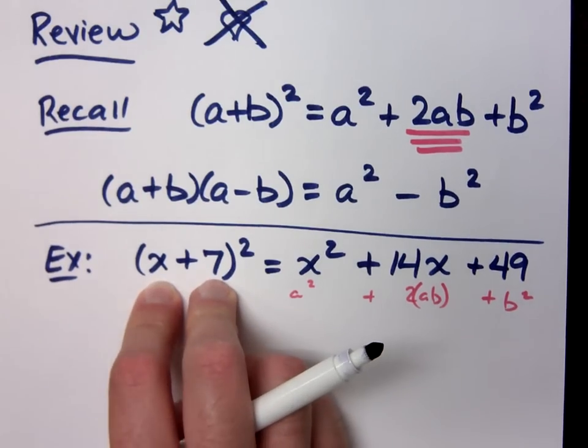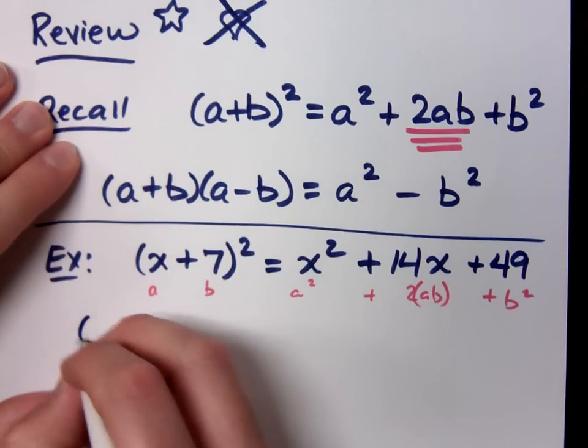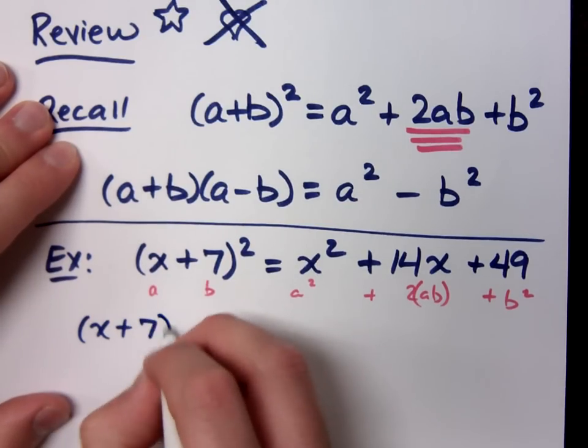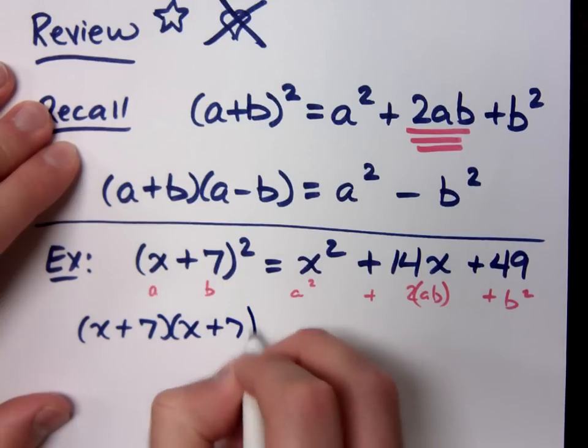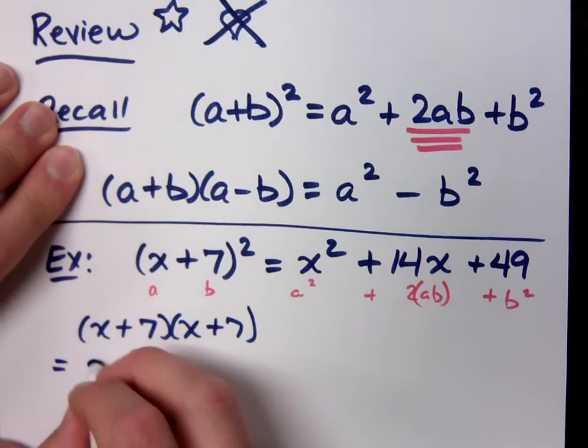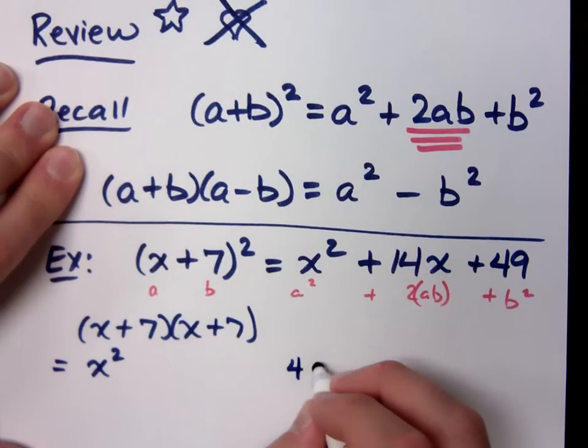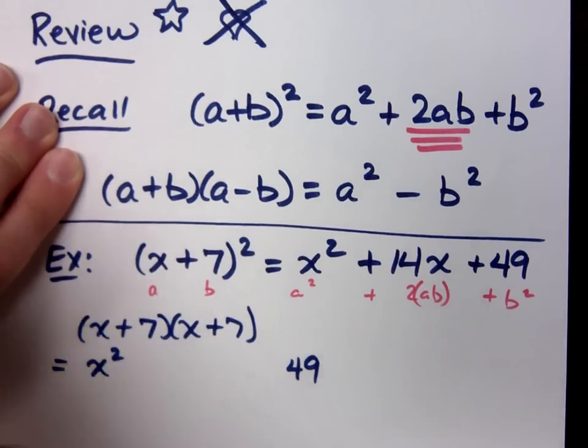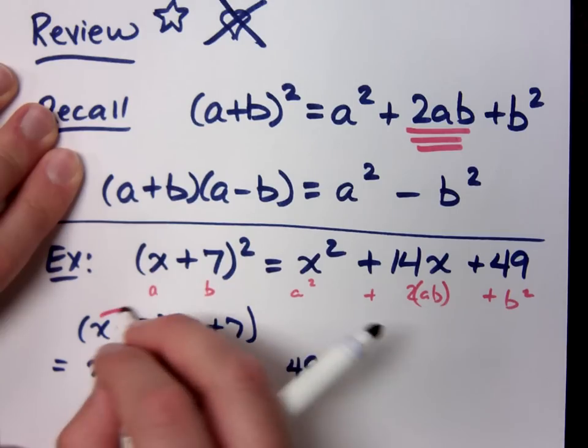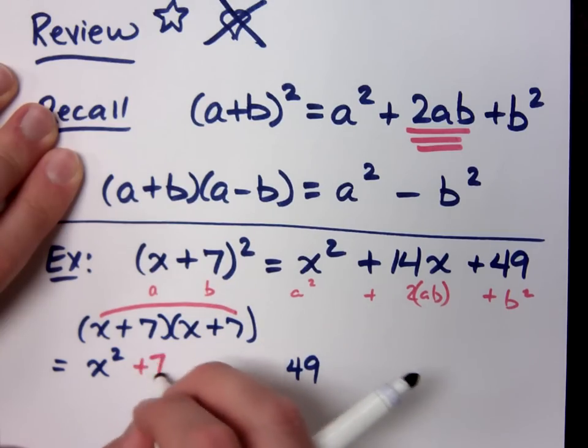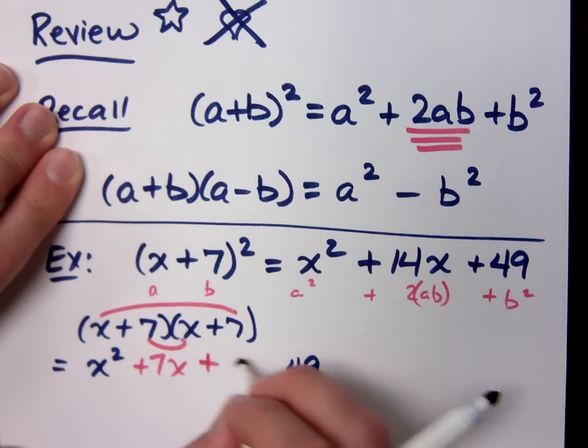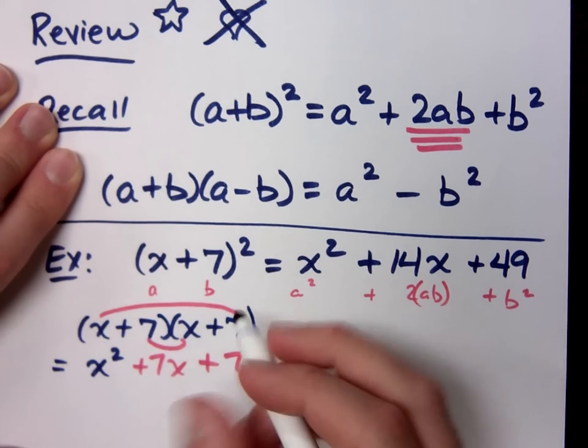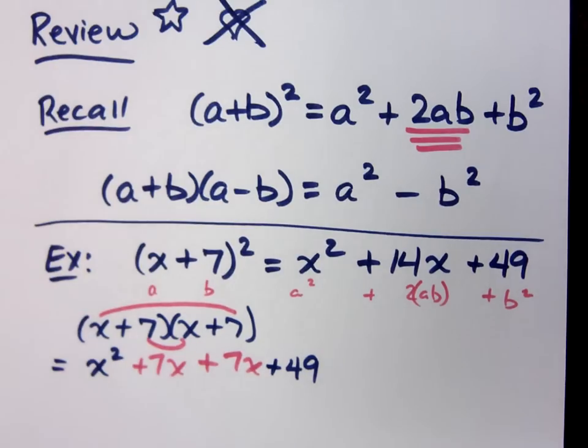If you had foiled this, if you had written it out like this: (x+7) times (x+7). Not only do you get x² and 49 when you foil, but you would also get outside is 7x. Inside is 7x. How many times do you see 7x? Twice. That's where the 2 comes from.